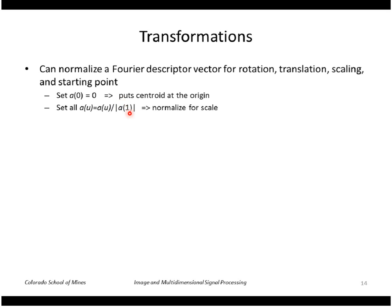Next, we'll divide through by the magnitude of the first Fourier descriptor, a of one, and that will normalize for scale.